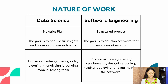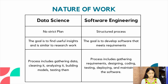In software engineering the goal is to develop software that meets the requirements of the company or stakeholders. The data science process includes gathering data, cleaning it, analyzing it, building models and then testing them. While in software engineering the process includes gathering requirements, designing, coding, testing, deploying and maintaining the software in the longer run.